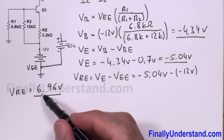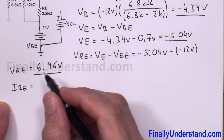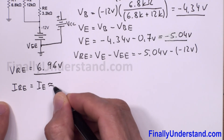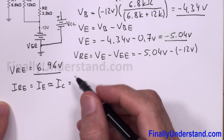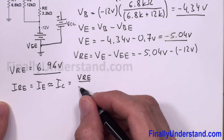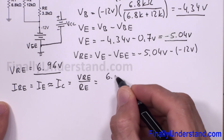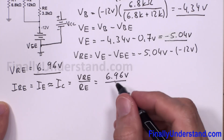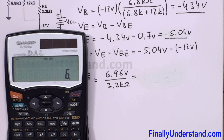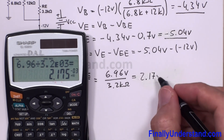To find IE, I divide the voltage across RE by its resistance. Since IRE equals IE, which is approximately equal to IC, I apply Ohm's Law: IC ≈ VRE divided by RE equals 6.96 volts divided by 3.2 kΩ. Using the calculator: 6.96 divided by 3.2×10³ gives 2.17 milliamps.